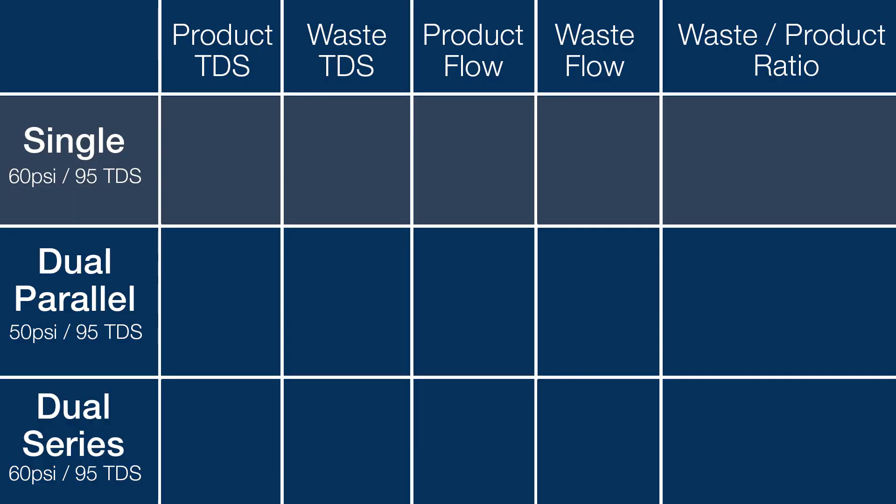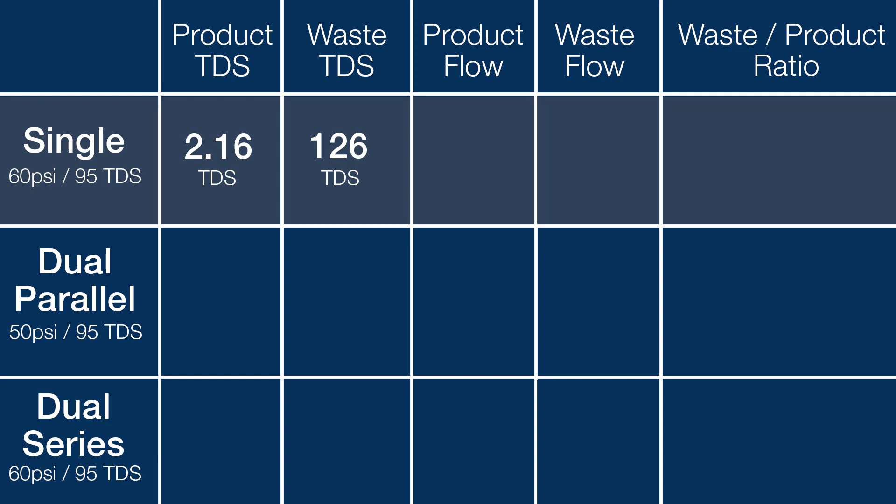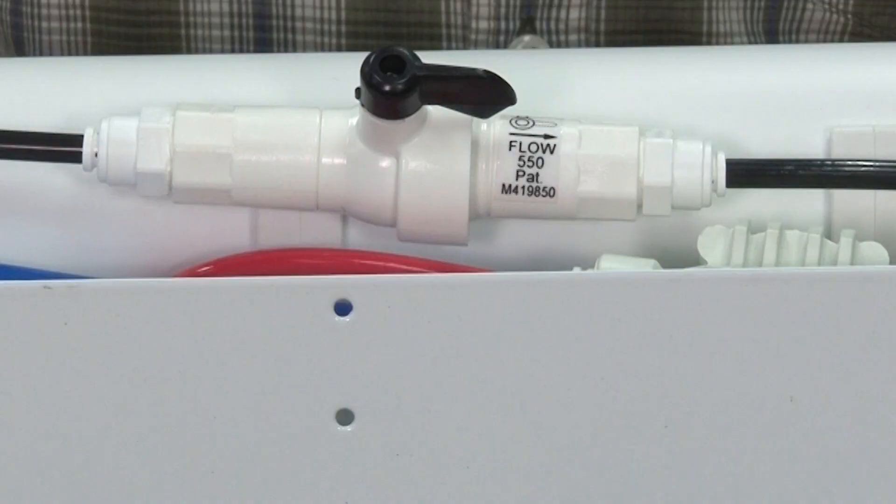The single Dow membrane was running at 60 PSI and able to bring the 95 TDS down to 2.16 TDS, pretty close to 98% rejection, which is pretty good considering some of the harder to remove elements in our water supply. The waste water or concentrate leaving the membrane measured 126 TDS, meaning the TDS of the waste water is roughly 33% higher than the tap water entering the membrane, which again was 95. The product or purified water flow rate was 190 milliliters a minute, which equates to 72 gallons a day, just shy of the listed 75 gallons a day. The waste water on systems like this is dictated by the flow restrictor on the waste water line. Some of you may have noticed the numbers on these. In this case, ours says 550, which means the flow restrictor is set for 550 milliliters a minute.